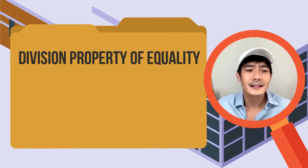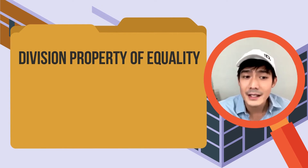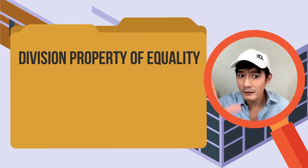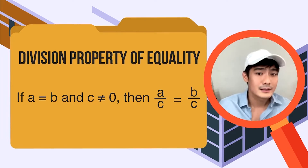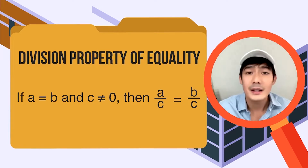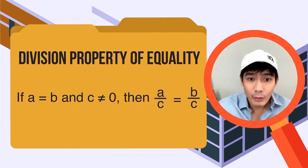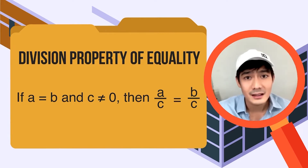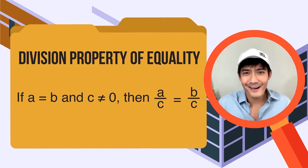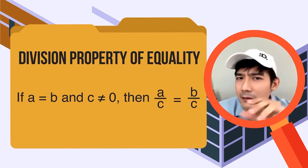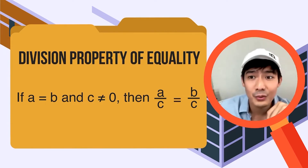Ganon din sa ating division counterpart nito. Ang kinaibahan lang, hindi pwedeng maging zero yung C. For real numbers A, B, and C: kung A ay equal sa B, at ang C ay hindi equal sa zero — tandaan nyo yan — A divided by C ay pareho lamang sa B divided by C. Bakit hindi pwedeng maging zero ang C? Kasi kapag sinubstitute natin yan, A over zero magiging undefined.